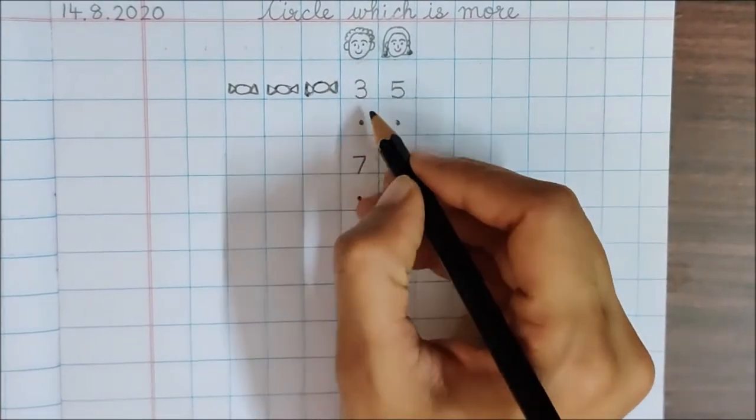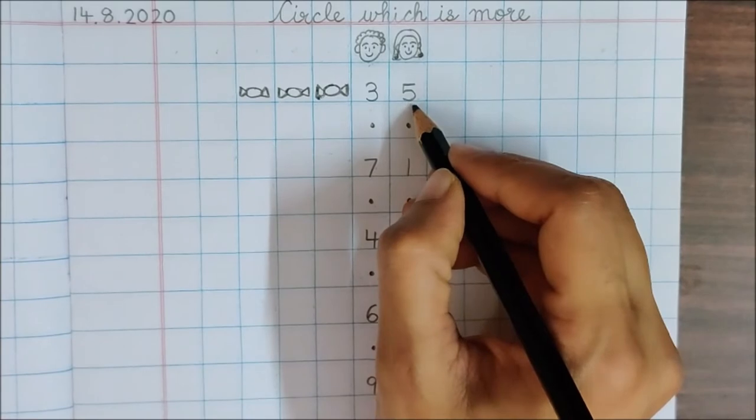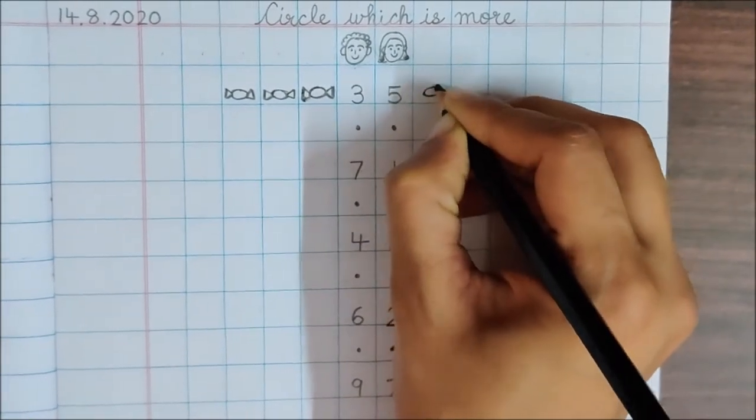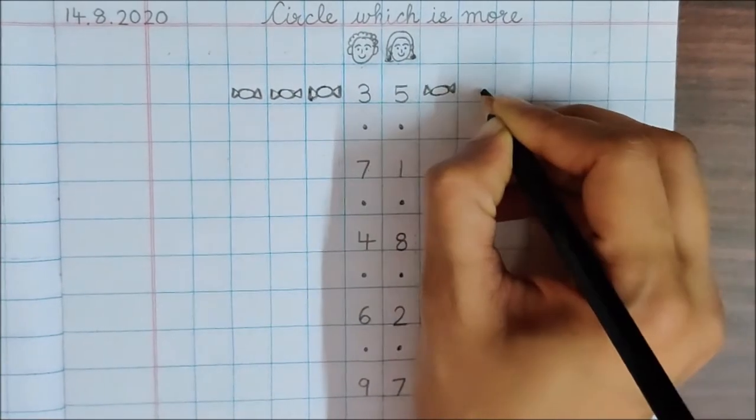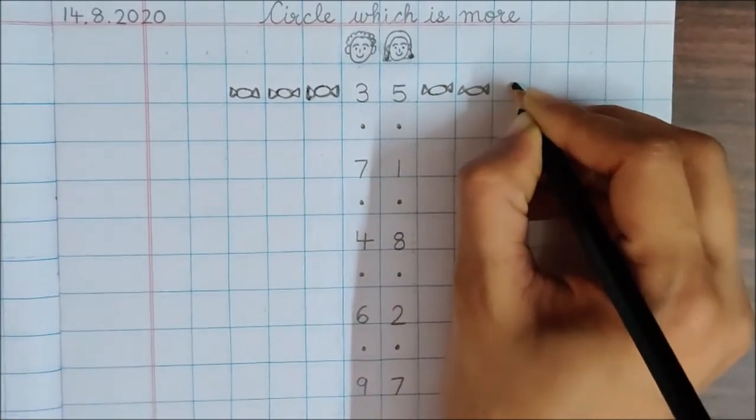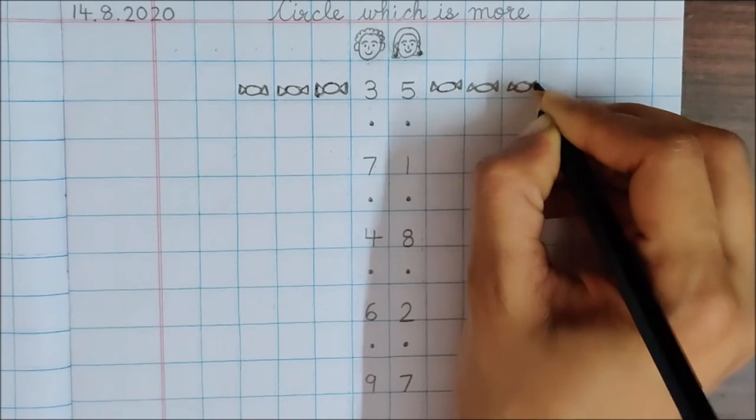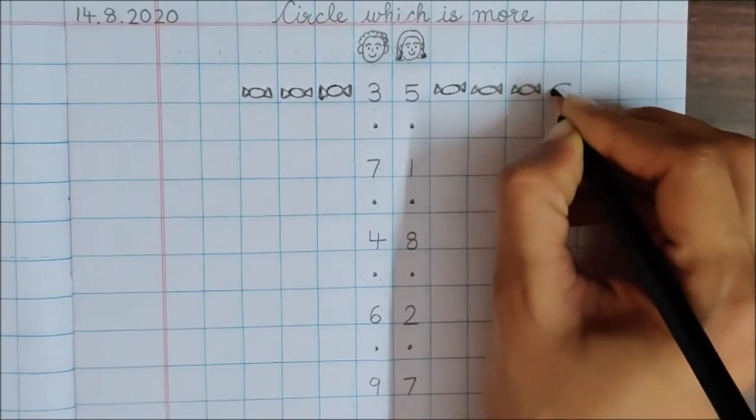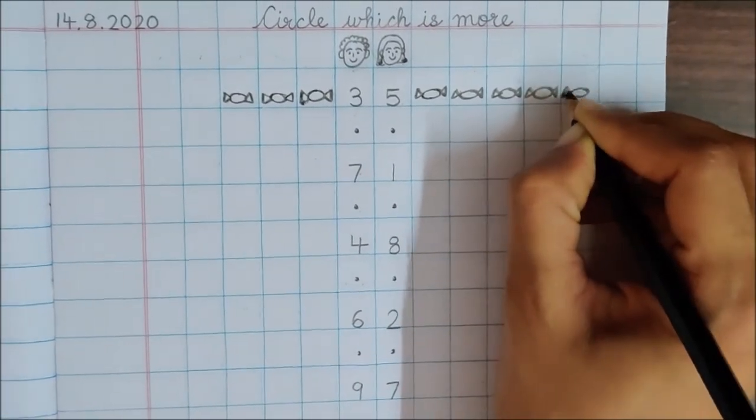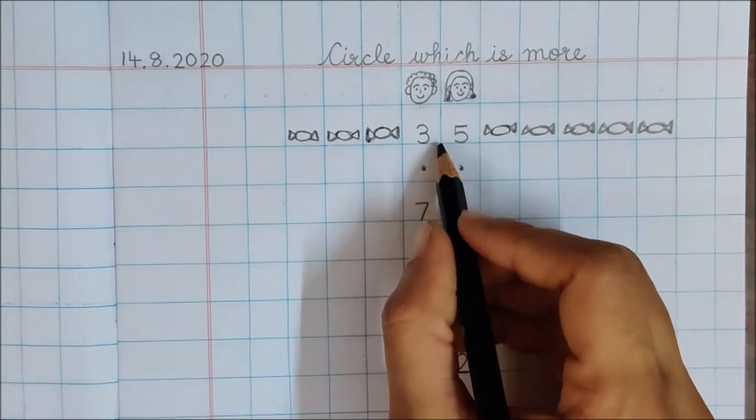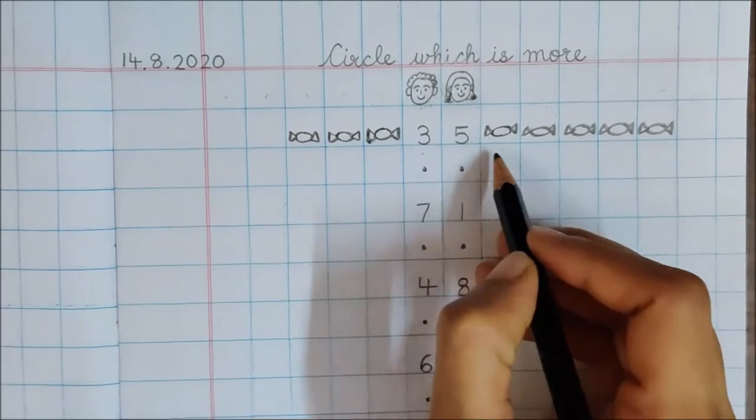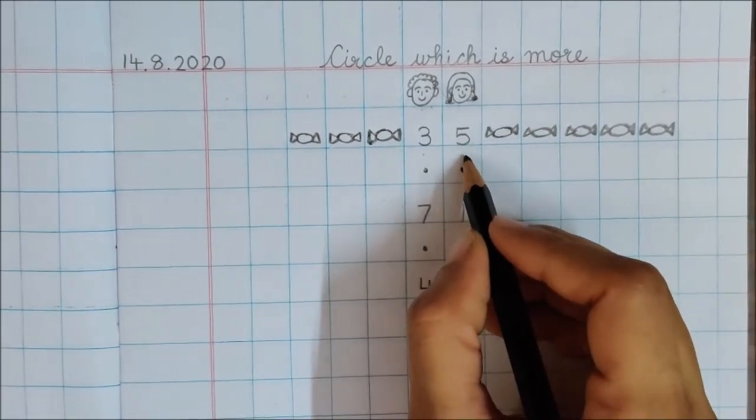Your papa got you 3 toffees and your mama got you 5 toffees. So draw 5 toffees here. 1, 2, 3, 4, 5. Now children, tell me. Your papa got you 3 toffees and your mama got you 5 toffees. Who got more toffees for you?